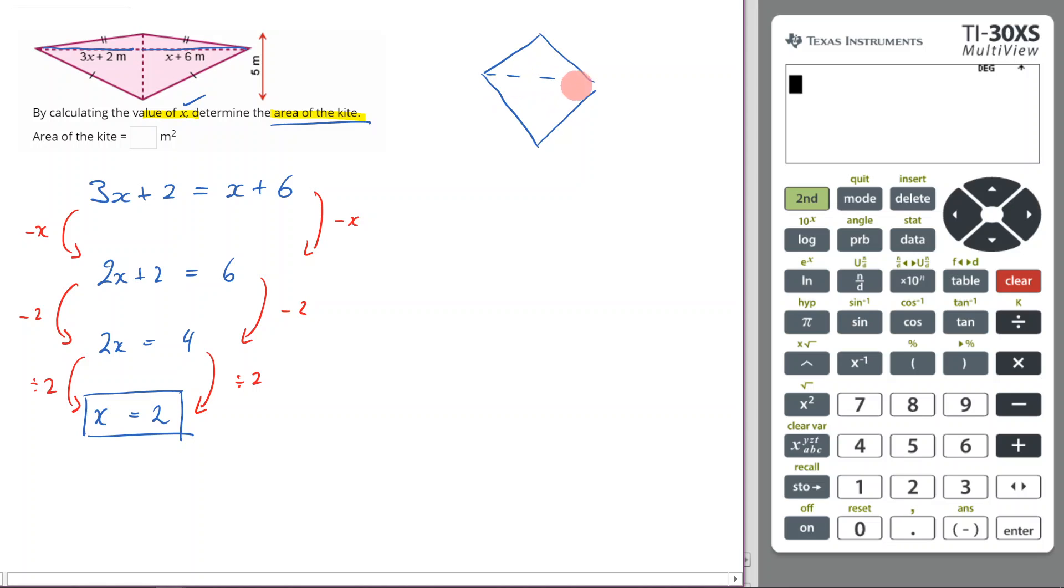Remember the way we find the area of a kite is we take this length here, which we'll call x, and then we take the height of the kite, which we'll call y, and we go: a half times x times y. That's the area of a kite - half times this length times this length.